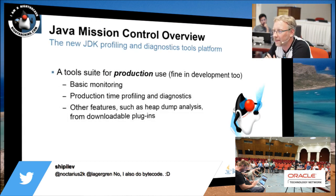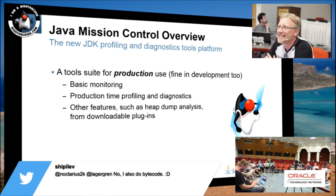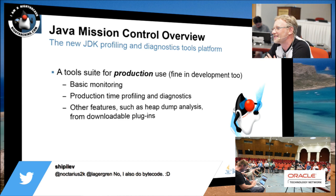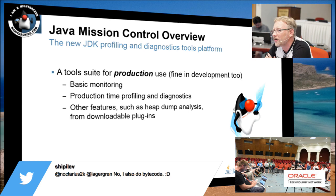Mission Control really came about as a way for JRocket to monitor how JRocket was being used in production systems. The initial reason was for us to become a Java licensee, because you needed to have an added value when you created your JVM implementation. And performance was not supposed to be an added value, so we needed to come up with something else — we made a screenshot of a mock-up and said we have manageability of the JVM, and they said yeah, that's added value.